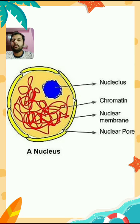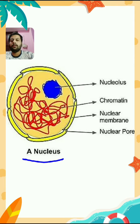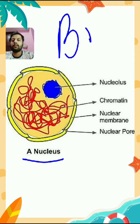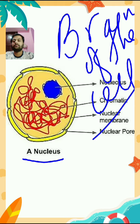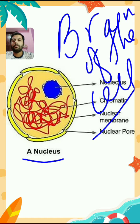Today we will start our new topic, that is nucleus — the third basic component. Nucleus is known as the brain of the cell. Why is it known as the brain of the cell? Because it controls all the activity of the cell, just like our brain controls all the activity of our body.